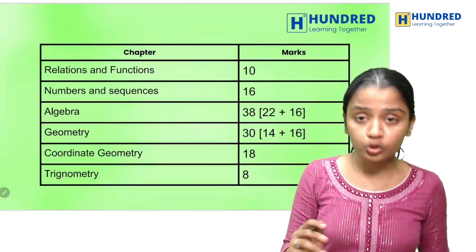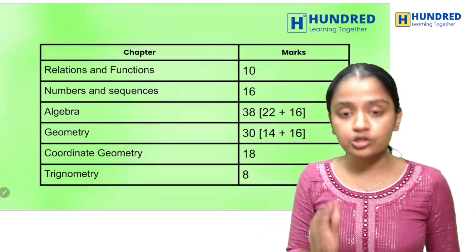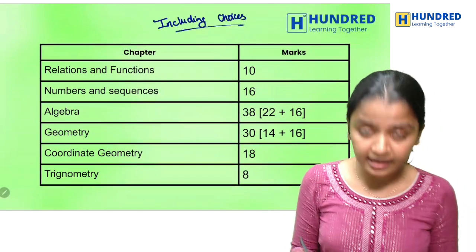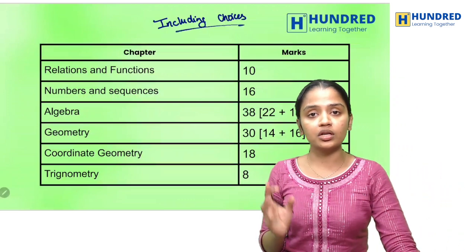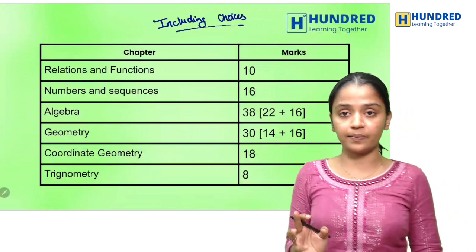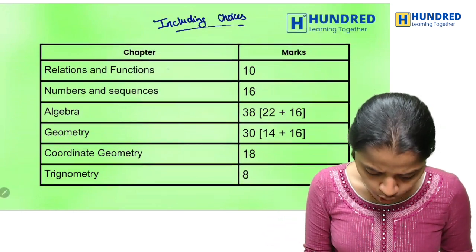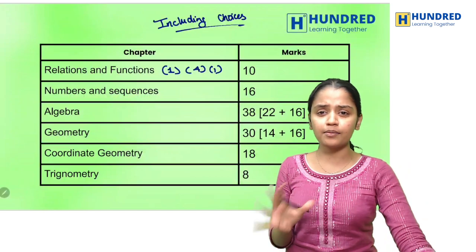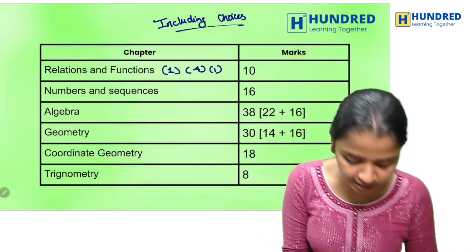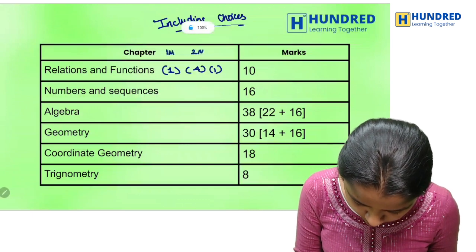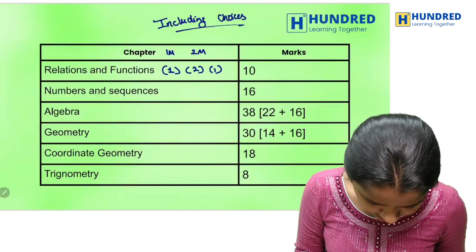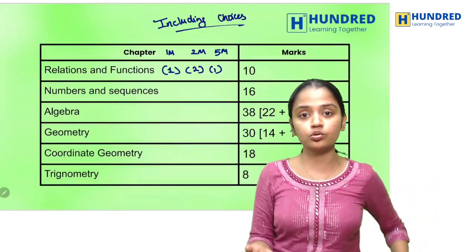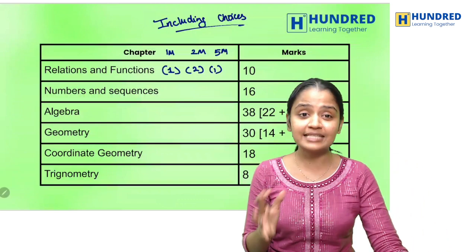Now how are the marks allocated? Including choices, for Relations and Functions you will have 10 marks — specifically 1 mark, 2 marks, 2 marks, and 5 marks. So 1 plus 4 plus 5 gives you 10 marks for this chapter.